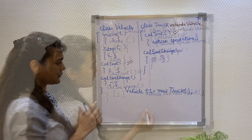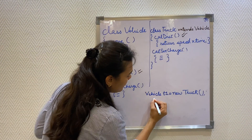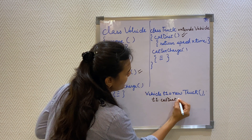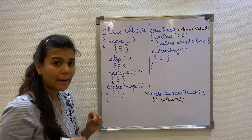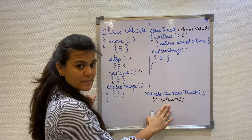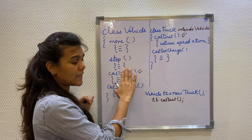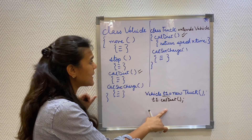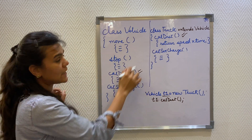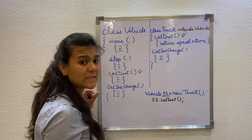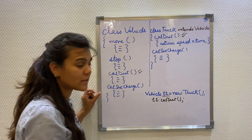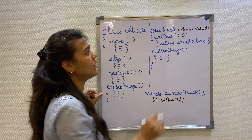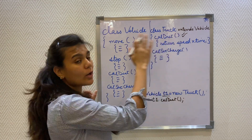This is what we need to understand. When I call t1.calculateDistance, the compiler will check whether calculate distance is present in my reference class, because we are using the reference type to call the calculateDistance method. And yes, calculate distance is present in my vehicle class. But when the object is created, it is actually created out of the truck class. So the calculate distance will actually be called from my truck class and not my vehicle class.